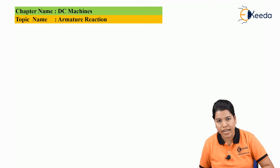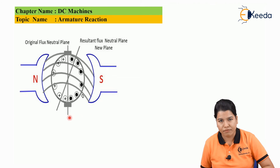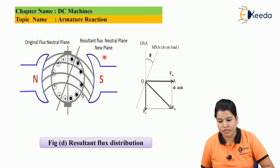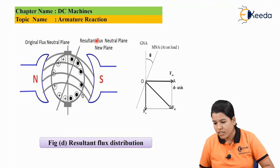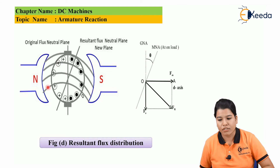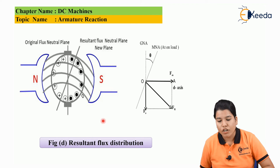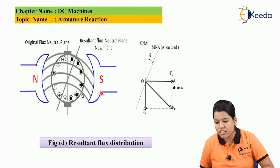The total effect of all the conductors under the north pole and south pole is that their flux aligns in such a way that the resultant flux of all conductors is in the downward direction, represented by phi_a. Now consider figure D, which shows the resultant flux distribution. Here, we can see that the magnetic neutral axis has moved to a certain extent from the original flux neutral plane. This has happened because both the main field and the armature are carrying current, so main flux and armature flux are both produced, and their interaction causes the resultant flux to become somewhat distorted.